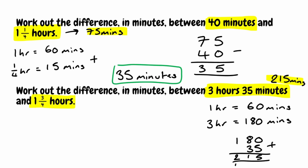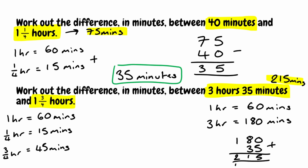Now for 1 and 3 quarter hours: 1 hour equals 60 minutes. To find 3 quarters of an hour, we first find a quarter by dividing 60 by 4, giving 15 minutes. Then multiplying by 3 gives us 45 minutes. So 1 and 3 quarter hours equals 60 plus 45, which is 105 minutes.